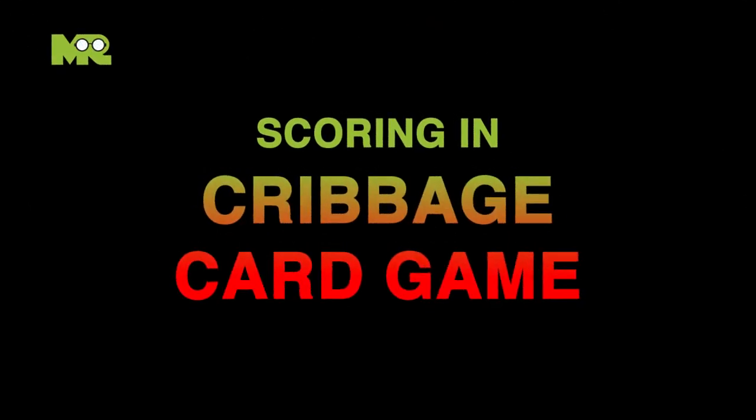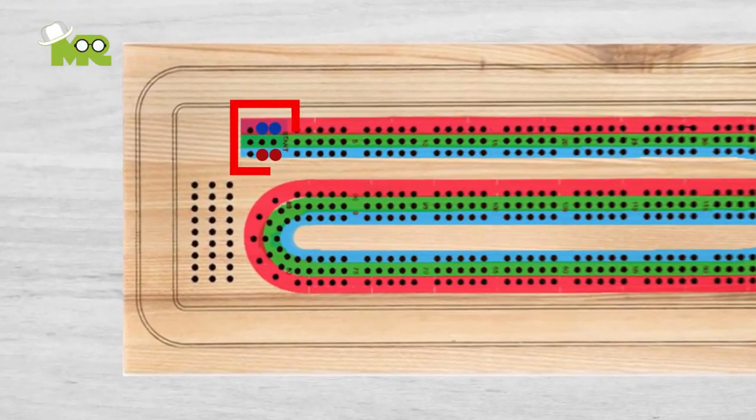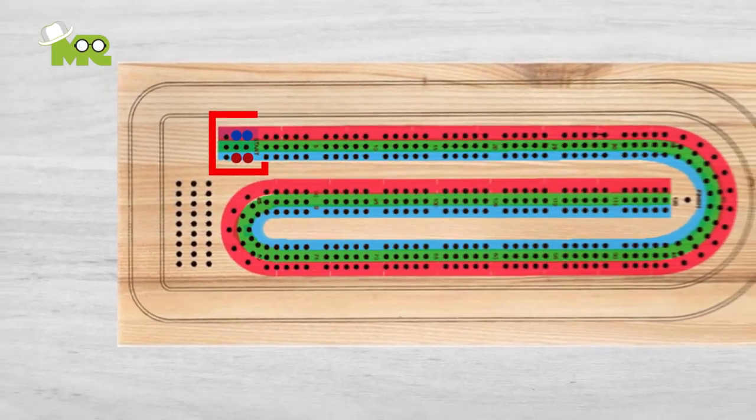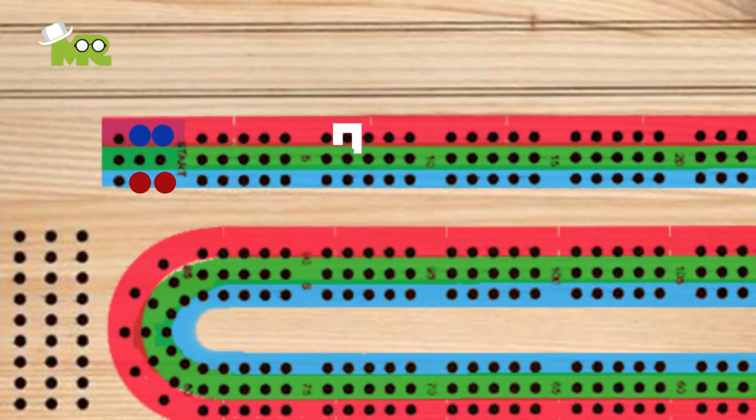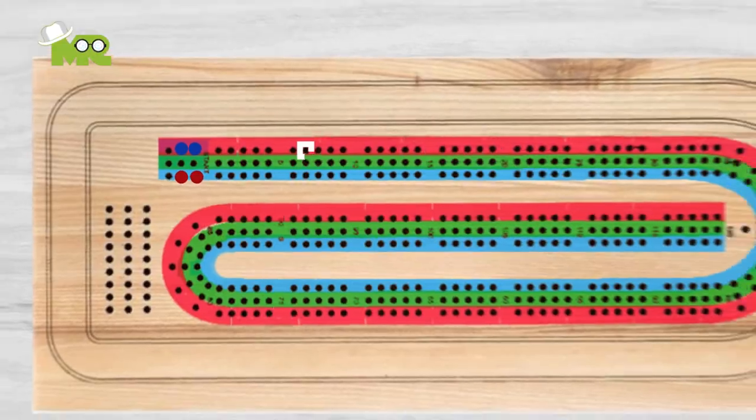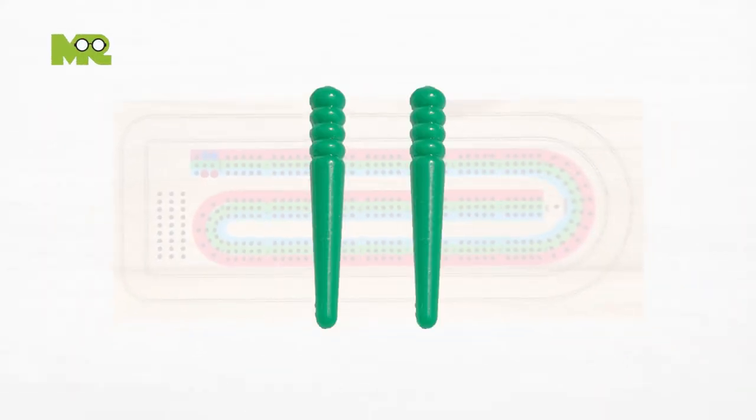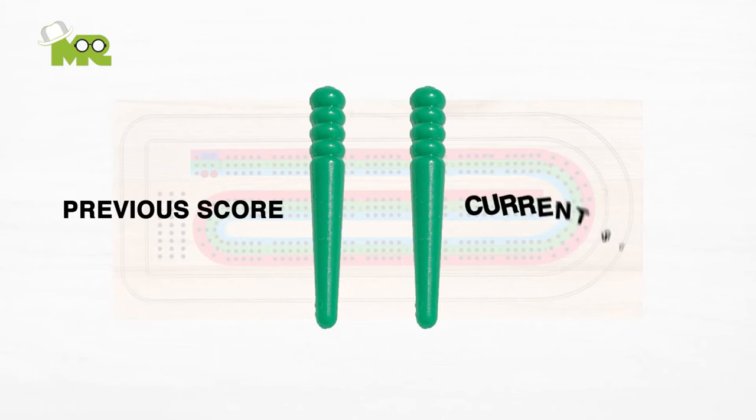Scoring in cribbage. Scores are recorded by moving the pegs on the cribbage board. Each hole in the peg board represents one point. Each player has two pegs. One peg represents the previous score and the other peg represents the current score.